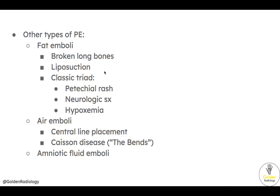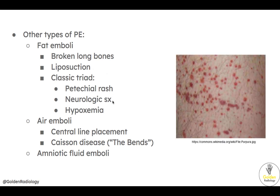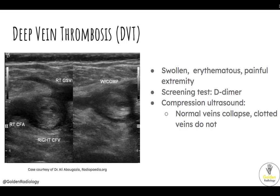You can also have air emboli, which commonly occur in central line placement, as well as caisson disease — also known as the bends — due to nitrogen in the blood. You can also have amniotic fluid emboli in the postpartum state. The most common cause of a pulmonary embolism is a deep vein thrombosis, or DVT. Clinically, patients present with a swollen, erythematous, painful extremity, typically unilateral. The screening test is a D-dimer, which should be elevated. The radiology study is a compression ultrasound, also known as a venous duplex.